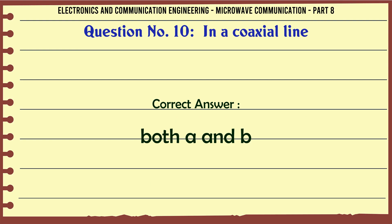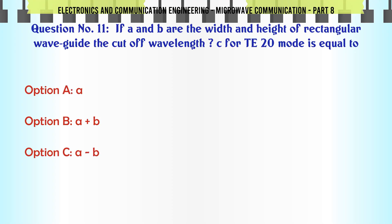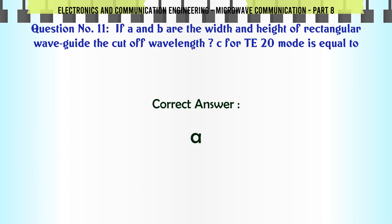If A and B are the width and height of a rectangular waveguide, the cutoff wavelength λc for TE20 mode is equal to — A. B, B. A, C. A/B, D. A+B. The correct answer is A.